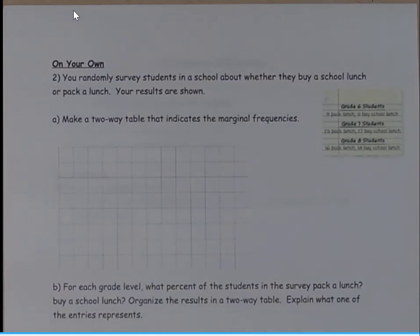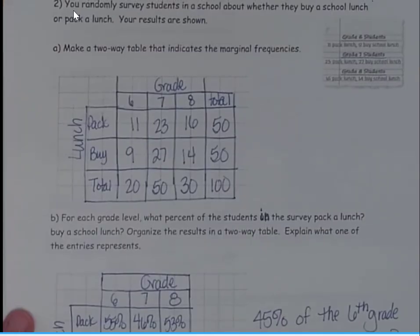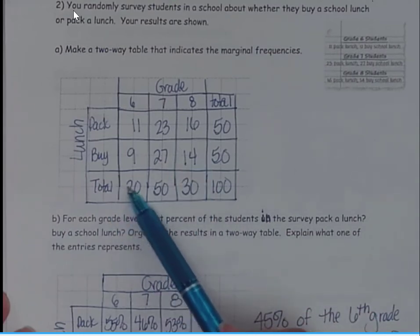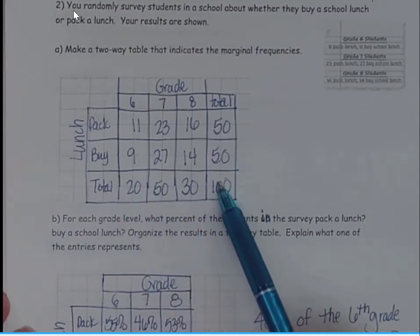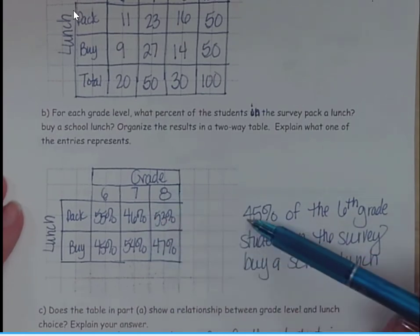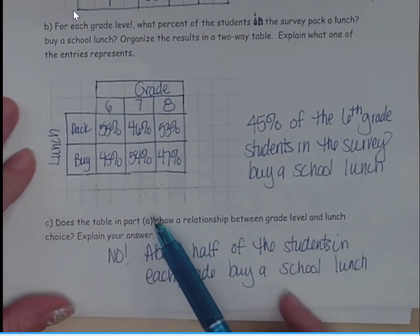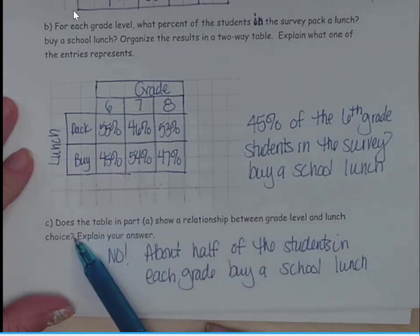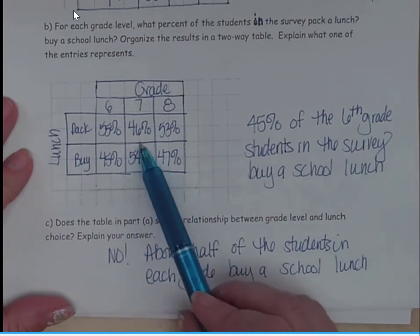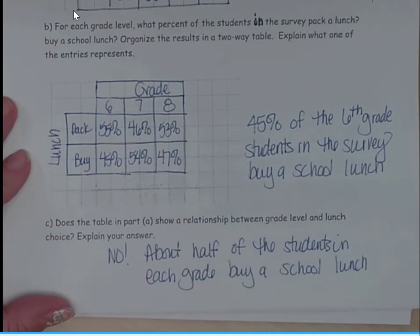Okay, so now it is your turn. Go ahead, do on your own number two. Answer questions A, B, and C. Hit pause and play when you are ready to check your work. All right, let's check to see how you did. We've got our two-way table here with our marginal frequencies. Notice both rows and columns add up to 100. Then we created our percentages here. So 45% of the sixth grade students buy a lunch to school. Does the table in part A show a relationship between grade level and lunch choice? No, it's honestly pretty split about 50-50. So we do not show a relationship here between grade level and the amount of students who buy their lunch.